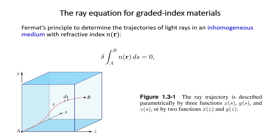Here, variables x, y, and z are functions of parameter s. The letter delta on the left side of the integral is a symbol of variation. Perhaps you remember this form of equation from classical mechanics — we could obtain the Euler-Lagrange equations of motion using the calculus of variation. Here, we don't care about the derivation; we only want to apply the equation and find the trajectory of light.